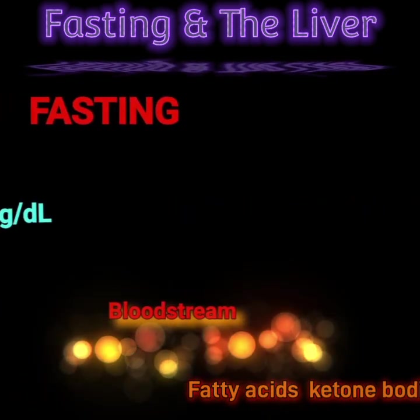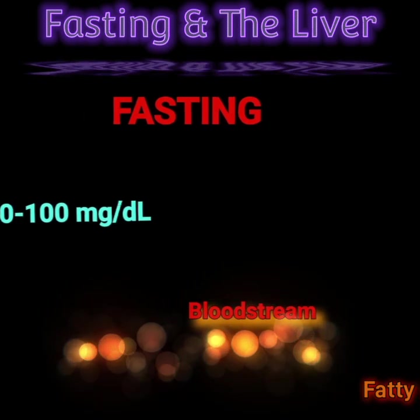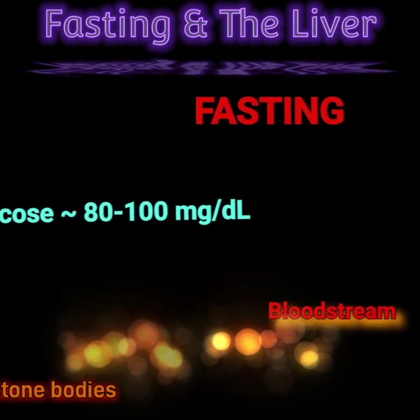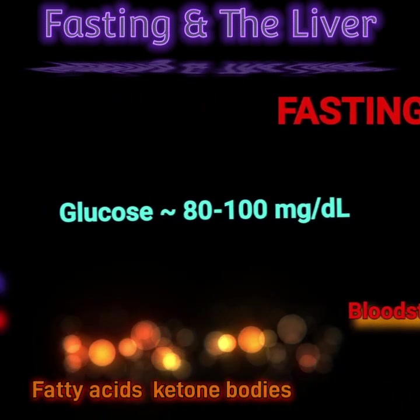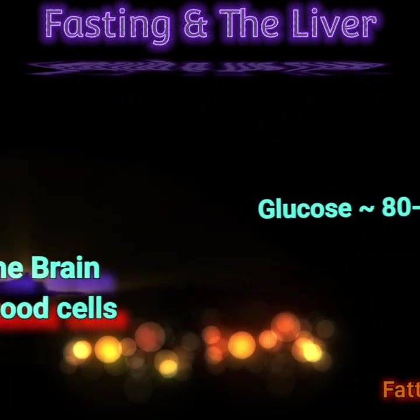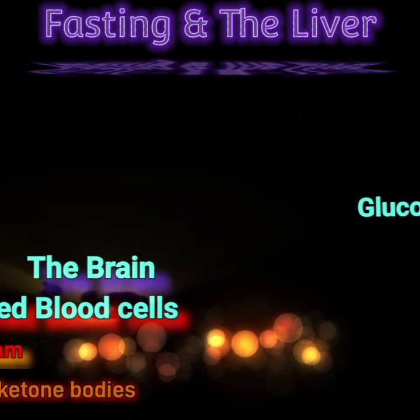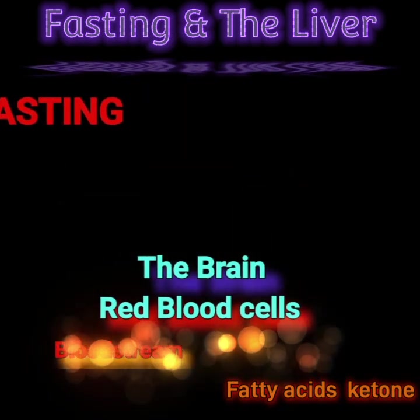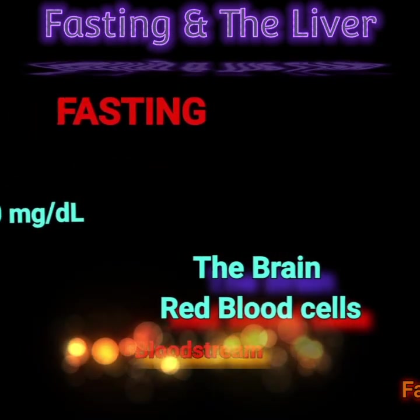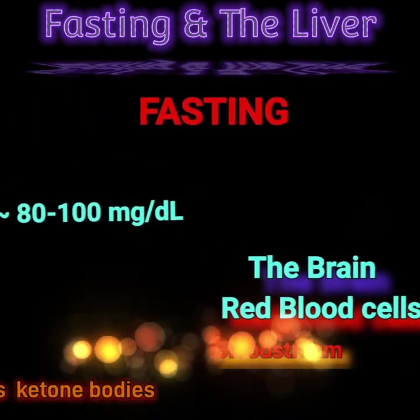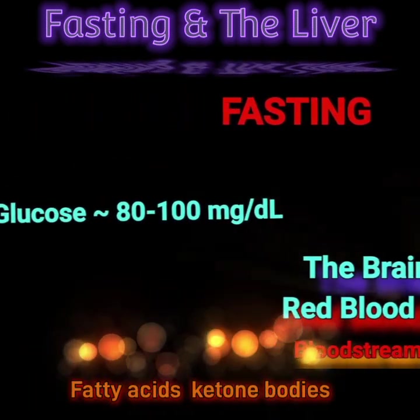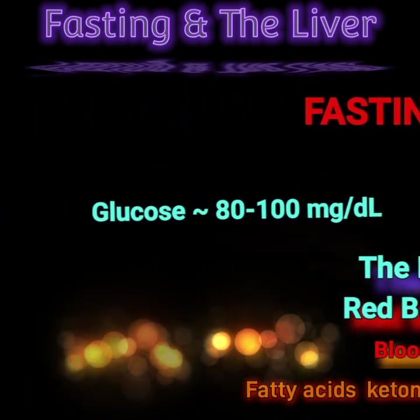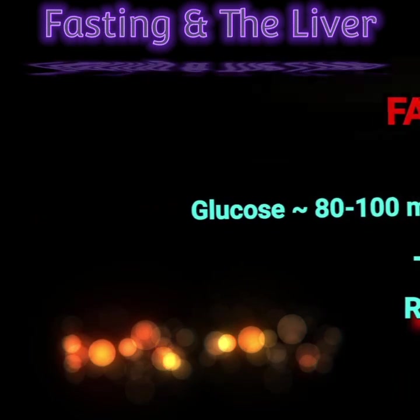Key tissues and cells that almost entirely depend on glucose in the plasma are the brain, red blood cells, kidney medulla, and testes.